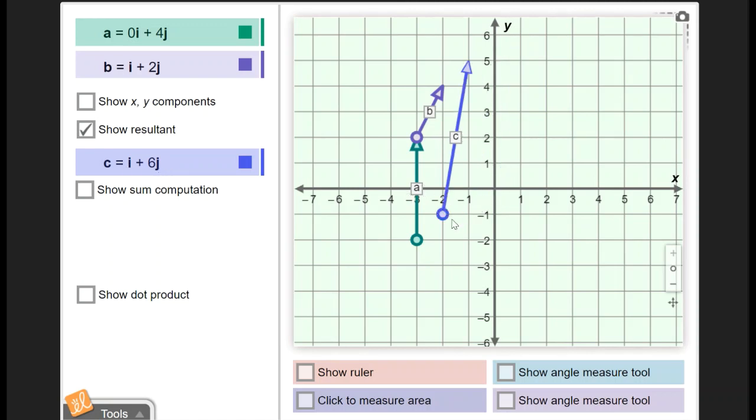If we drag it all the way over, you can see it does actually match. Remember that a vector can be moved anywhere as long as it's in the same direction and it's the same length. So even though this is the resultant labeled c, you can literally put it anywhere and it doesn't change the value of that vector.